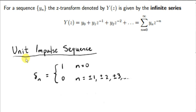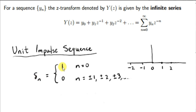Let's get the Z-transform of the unit impulse sequence. This sequence has value 1 only when n=0, and value 0 for all other values of n: n=1, n=2, n=3 give 0, and similarly for n=-1, -2, -3, etc.